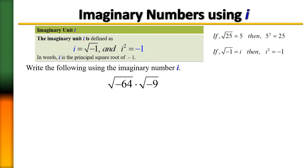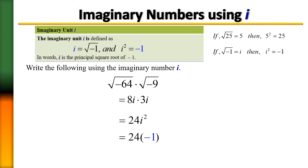Think of these negative radicals as imaginary numbers, because they produce imaginary numbers, not real numbers. Don't look at negative 64 times negative 9 and treat it as a positive number. You need to evaluate each individually. The square root of negative 64 equals 8i, and the square root of negative 9 equals 3i. Multiplying these: 8 times 3 is 24, and i times i gives i squared, which by definition equals negative 1.